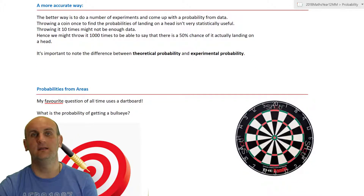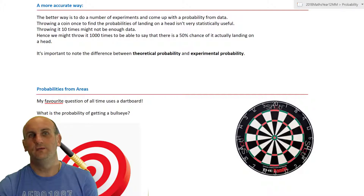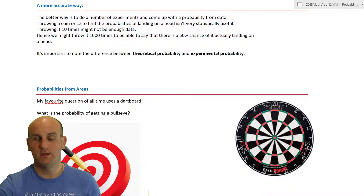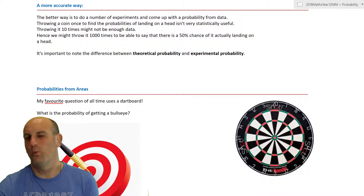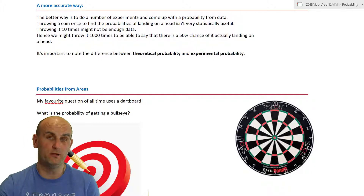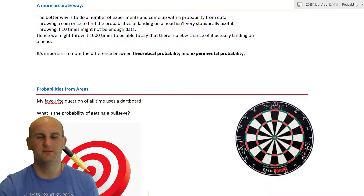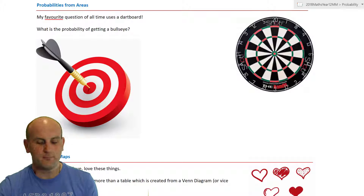A more accurate approach is using empirical data. Rather than guessing, you conduct a mathematical or statistical survey, and as you build up more and more data you become more precise and accurate. For example, if I throw a coin ten times I might not get exactly 50% heads, but if I throw it a thousand times my experimental probability gets closer and closer to one half.